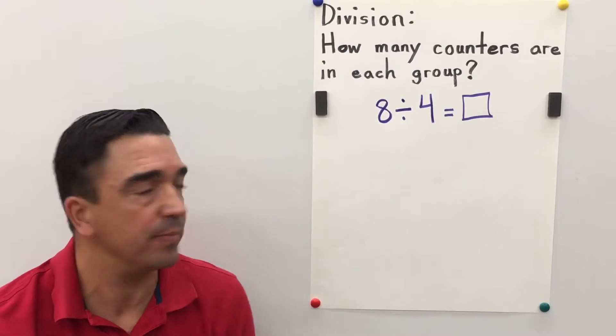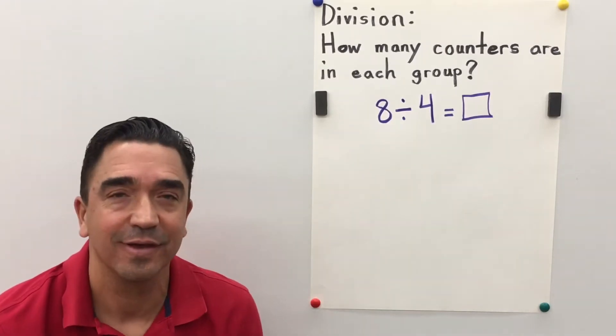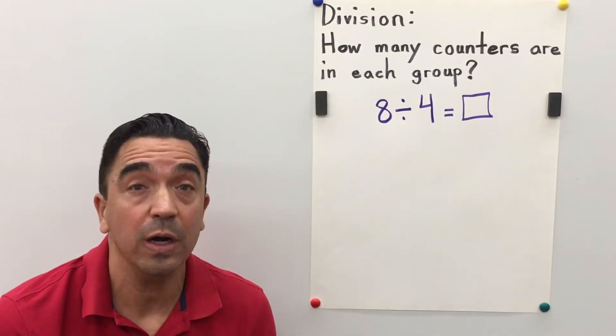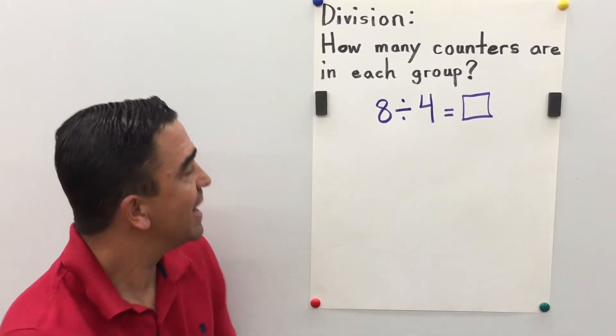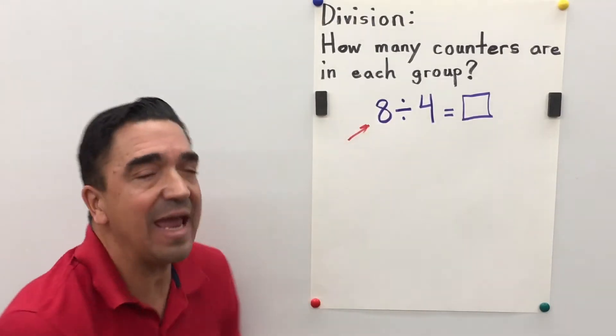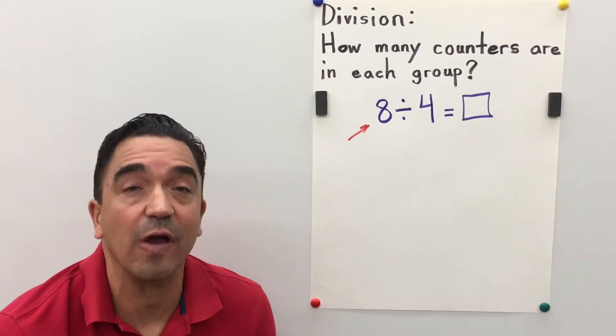Here's our division problem. 8 divided by 4 equals, well, 8 is going to represent our counters.